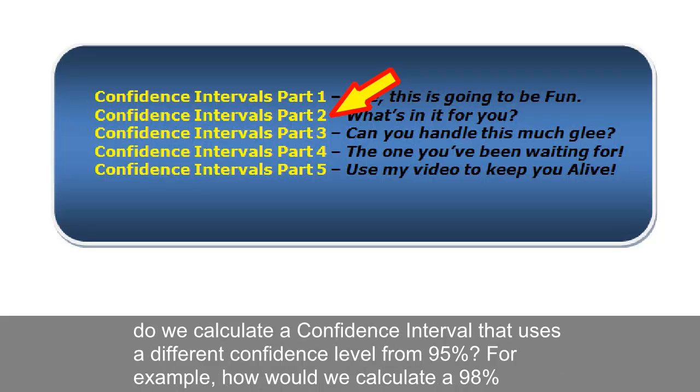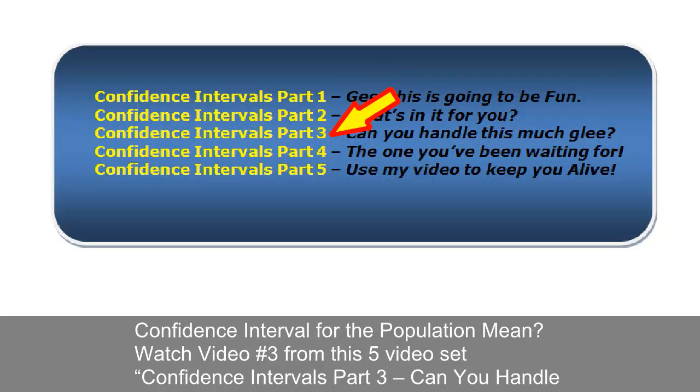But how do we calculate a confidence interval that uses a different confidence level from 95%? For example, how would we calculate a 98% confidence interval for the population mean? Watch video number 3 from this 5 video set.